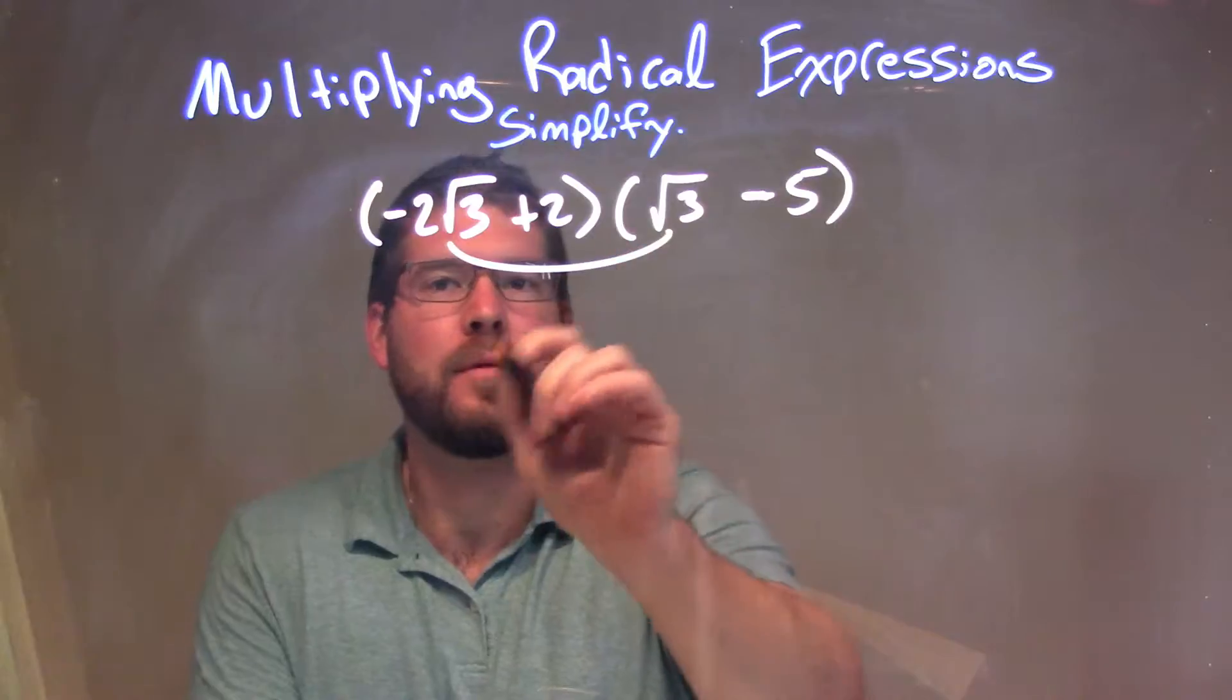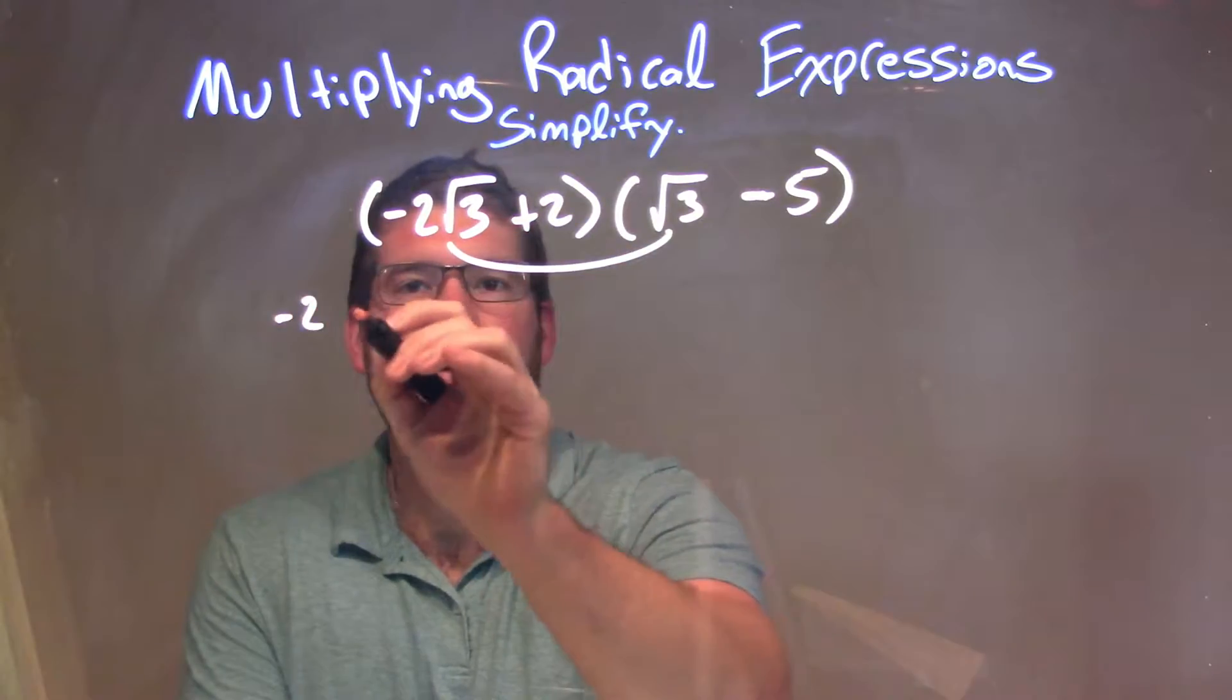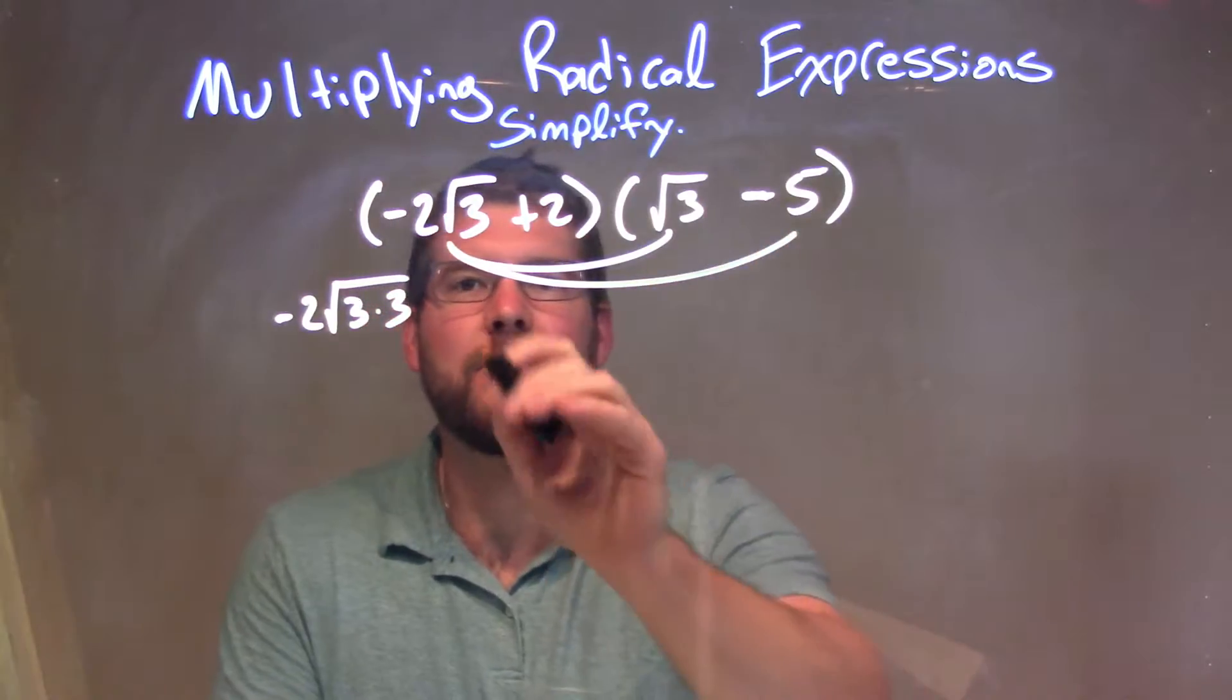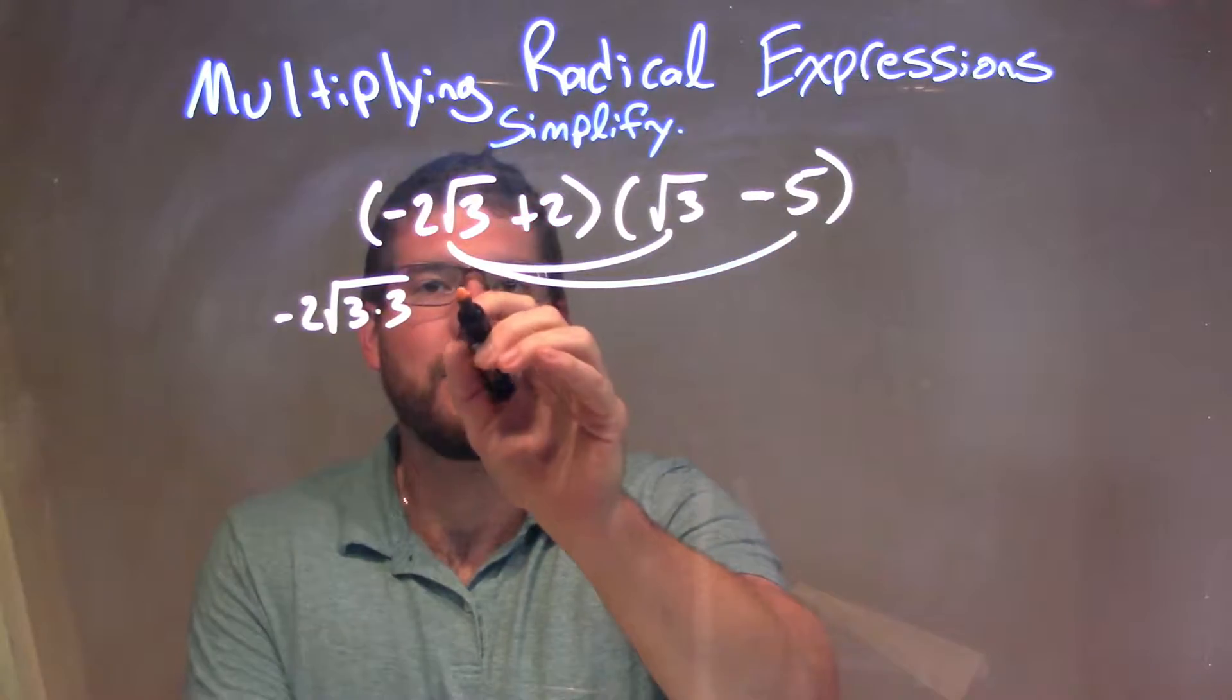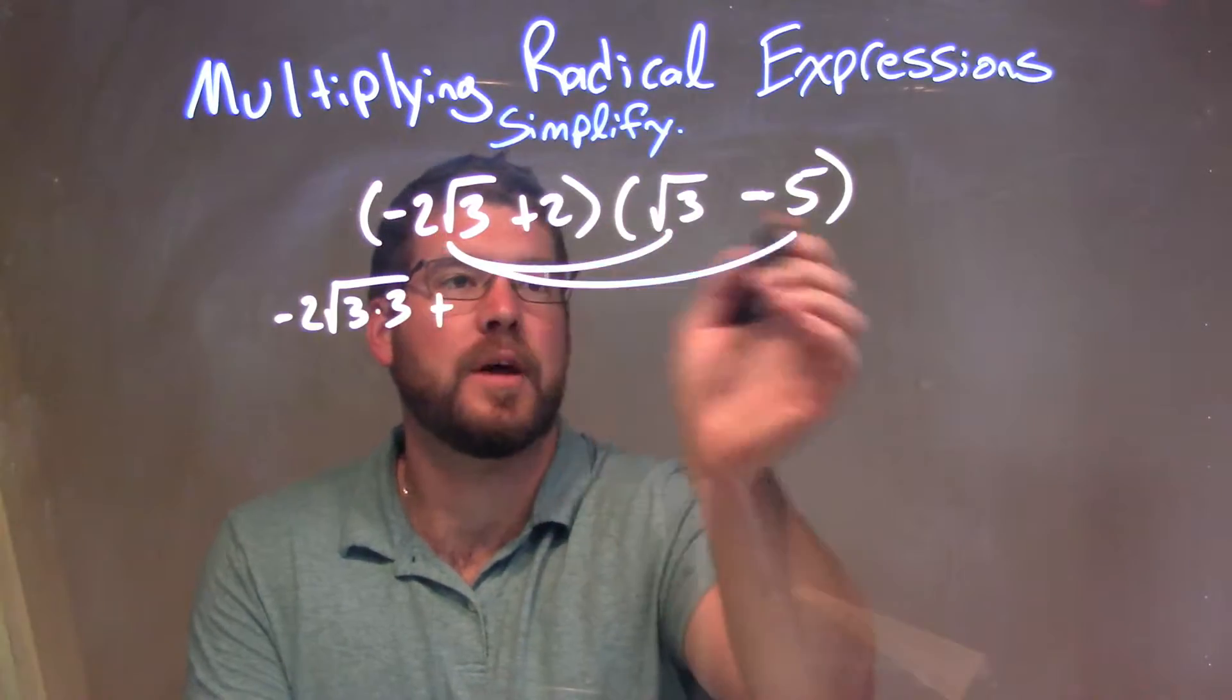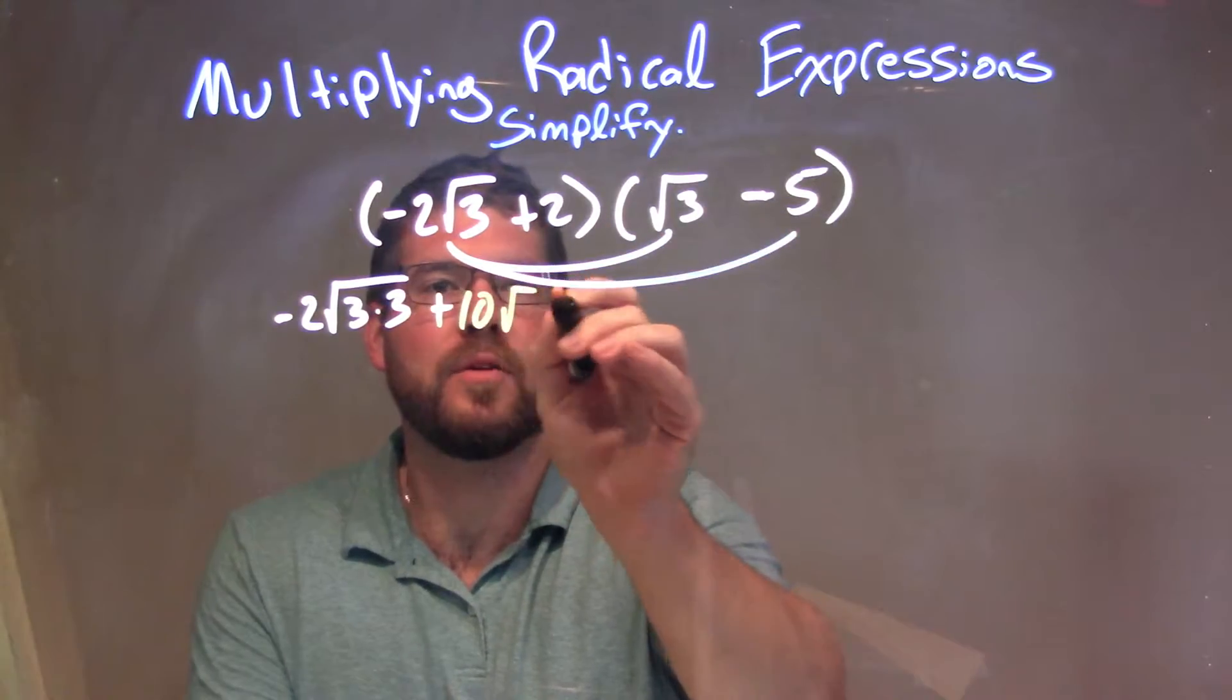Negative 2 times the square root of 3 comes out to be negative 2 square root of 3 times 3. Again, negative 2 square root of 3 times negative 5 is positive, both negative. 2 times 5 is 10, so 10 square root of 3.